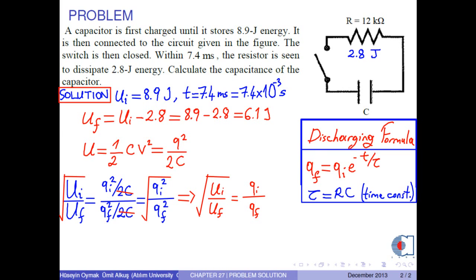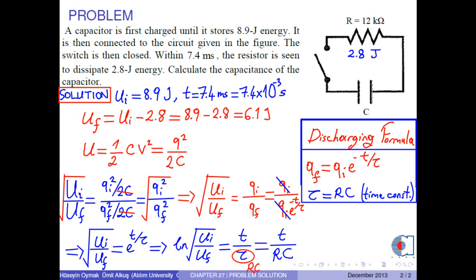Q final has the formula Q initial times E to negative T over tau. So, the right hand side becomes E to T over tau. Natural logarithm of both sides is Ln of square root of Ui over Uf equals T over tau. Tau is R times C. From this, we obtain an expression for C as T over R times Ln of square root of Ui over Uf.